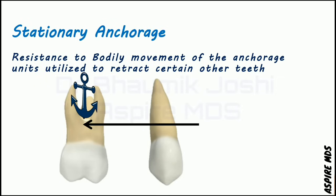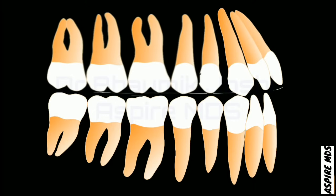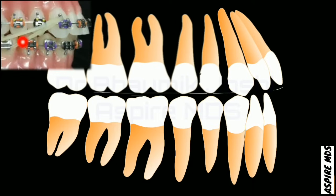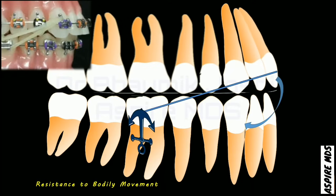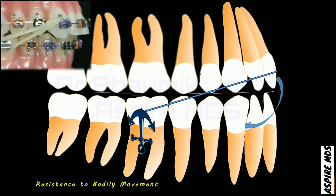Some books say that stationary anchorage does not exist in intraoral appliances because all of them show some kind of movement. An example of stationary anchorage: the maxillary anteriors are in a proclined position. Elastics are used to join them to the mandibular molar. This elastic band connects the anterior teeth to the mandibular molar, pulling the maxillary anteriors back into their normal position. This is achieved by resistance to bodily movement by the mandibular molar — an example of stationary anchorage.